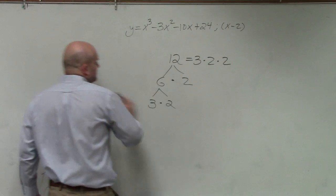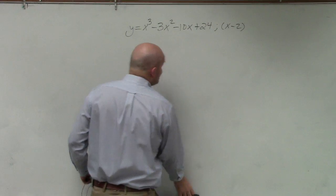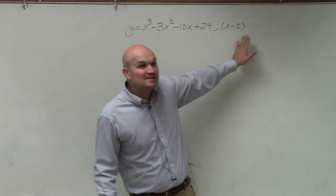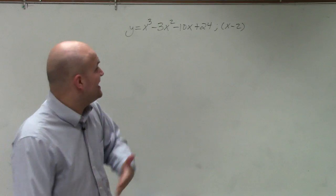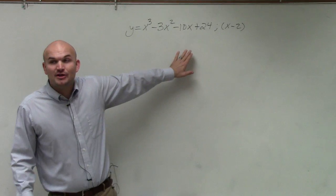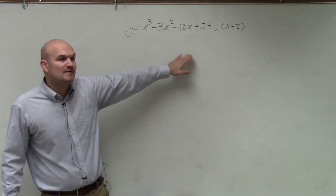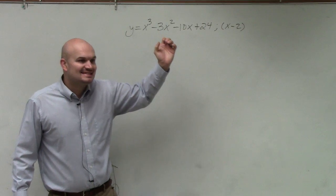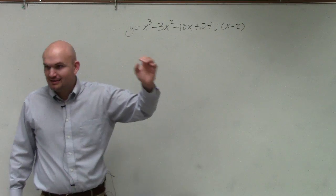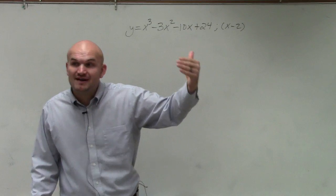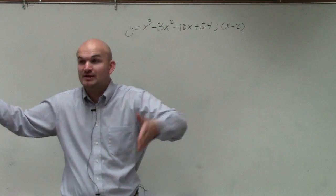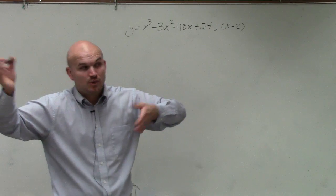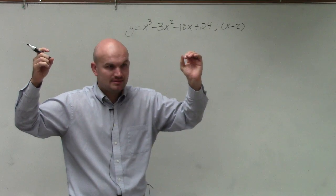So what they did was they told us we have a factor. They said, hey, x minus 2 is a factor. So that tells you when x minus 2, when you divide x minus 2 into this polynomial, you're going to have a remainder of 0. x minus 2 evenly divides into it because they said it was a factor. Just like 6 is a factor of 12. 6 evenly divides into 12 with a remainder of 0, correct?